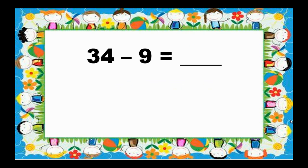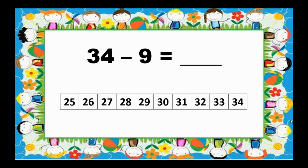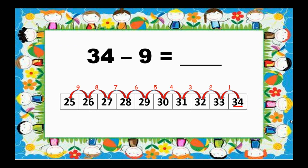Next, 34 minus 9 equals blank. Let's count back, starting from 34. Count with me: 34, 33, 32, 31, 30, 29, 28, 27, 26, 25. So, 34 minus 9 equals 25.